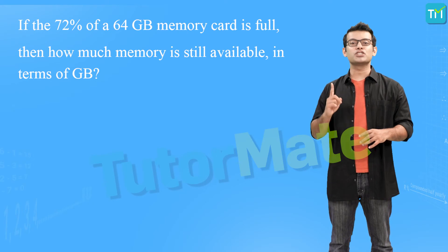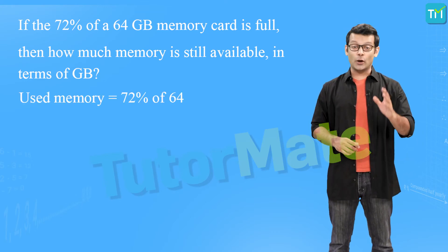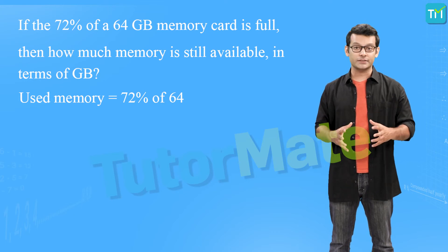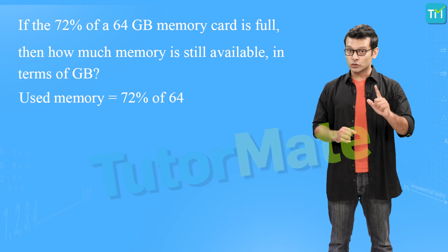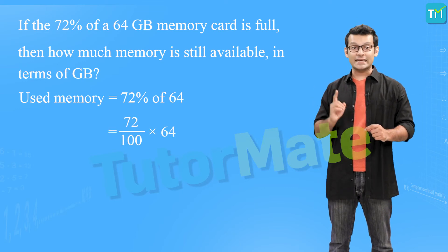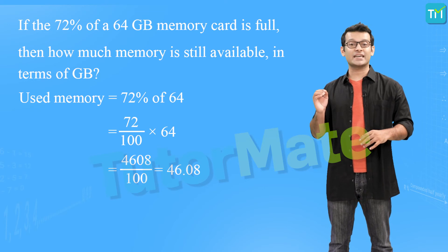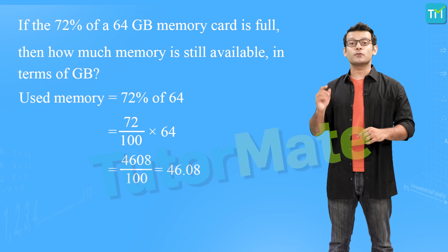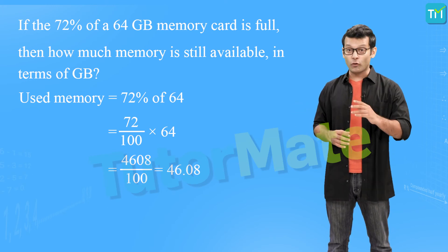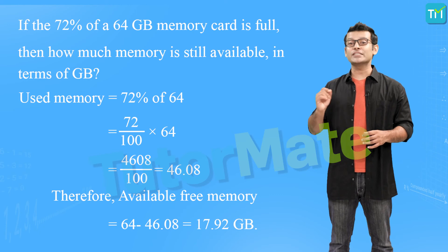Let's solve a problem: 72 percent of a 64 GB memory card is full — how much memory is still available? The memory used is 72 percent of 64 GB, meaning if we divide 64 GB into 100 parts, 72 parts are already used. So we calculate 72 upon 100 multiplied by 64, giving 4608 upon 100, which equals 46.08 GB used. Therefore, the available memory is 64 minus 46.08, which equals 17.92 GB.